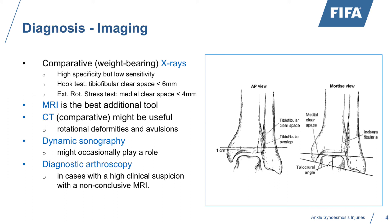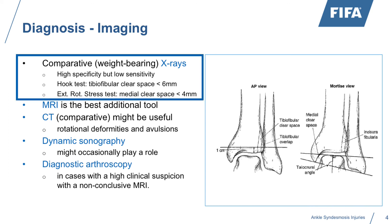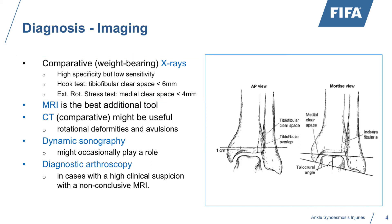Regarding diagnosis, we now know that comparative weight-bearing x-rays have a high specificity but a low sensitivity. That means you can use them in your setup, but as with the clinical tests, it's not pathognomonic. We really need to create a cocktail of all the diagnostic potential we have in order to fine-tune towards the diagnosis. MRI is of course a static investigation, but very helpful in identifying the ligaments themselves. We are talking about four ligaments: three on the lateral side — the AITFL (anterior inferior tibiofibular ligament), the IOL (interosseous ligament), and the PITFL (posterior inferior tibiofibular ligament) — and on the medial side, the deltoid ligament.